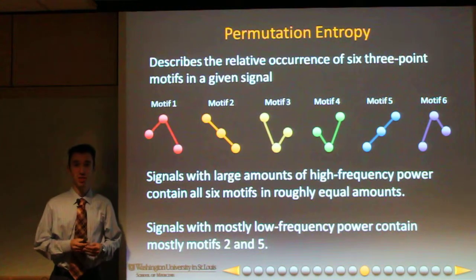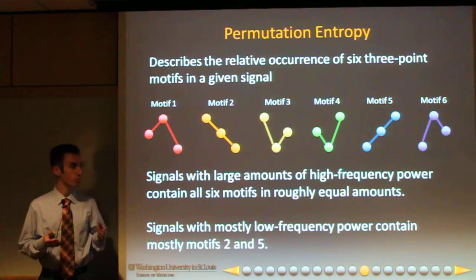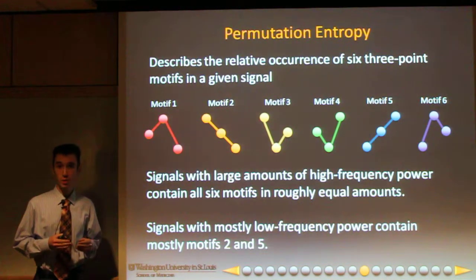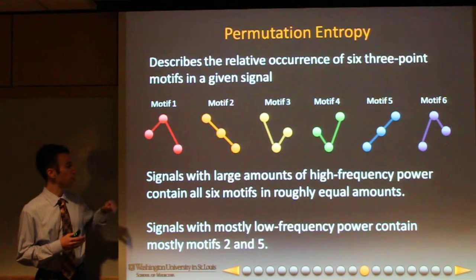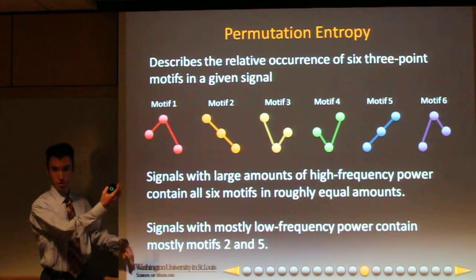Signals with large amounts of high-frequency power contain all six motifs in roughly equal amounts. Signals with mostly low-frequency power contain mostly motif two, a down slope, and motif five, an upward slope.